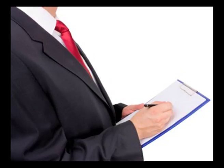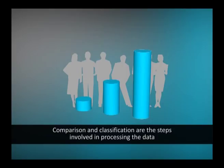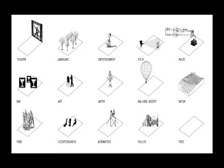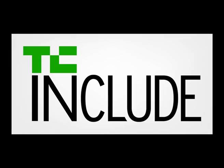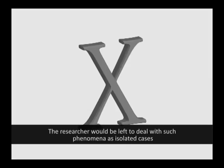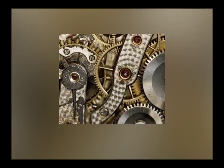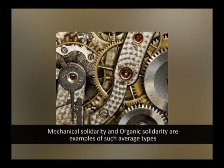Sources of data include social survey, observational, and interview methods. The next step in research is to process the information collected to make it intelligible through comparison and classification. Typologies are models consisting of a set of traits which tend to occur in conjunction with each other. When a typology is rooted in empirical data and the traits included are most commonly distributed, it is called the average type. Building an average type helps in categorizing a whole class of phenomena under one category. Mechanical solidarity and organic solidarity are examples of such average types.